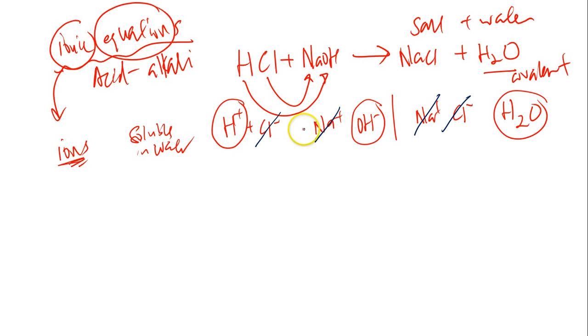So we copy this into the next step. H plus, which is from HCl, plus OH minus, which is from NaOH, giving us H2O. So this is the ionic equation.